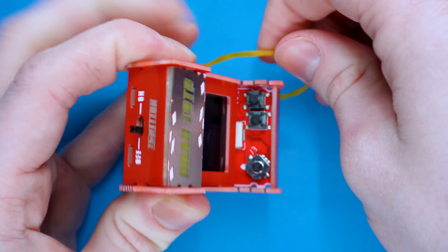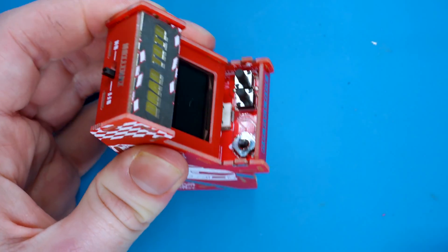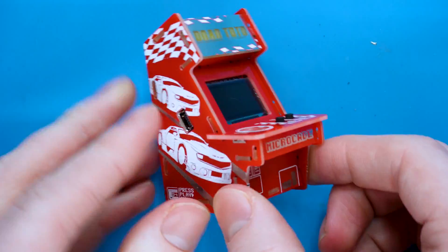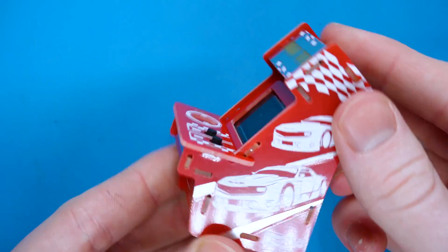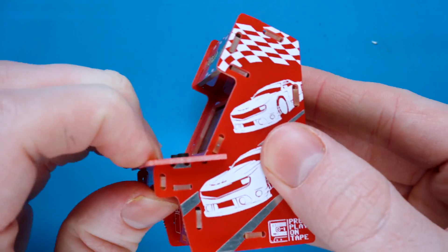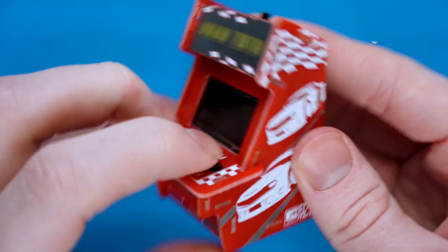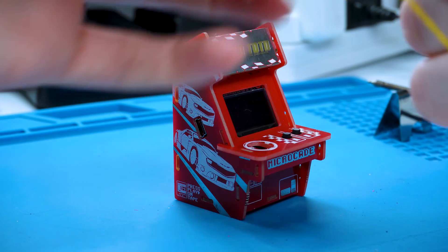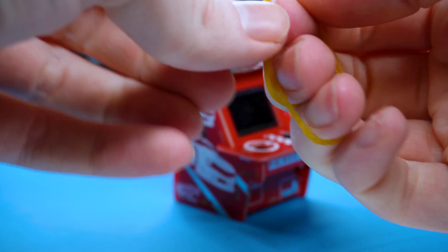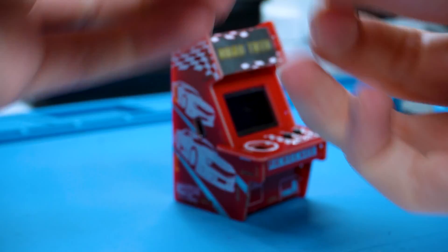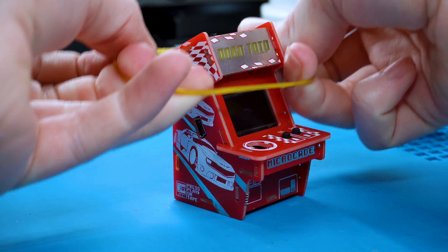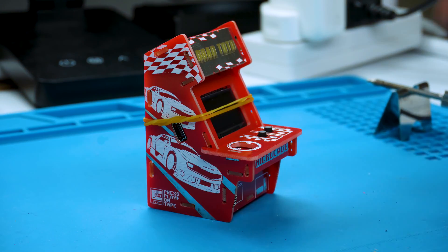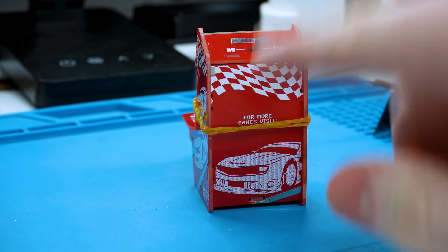Once we're happy with the assembly, we can actually go ahead and take off the rubber band and make the final assembly, which is the control board cover. This will actually lock it together. We don't actually need to do any more soldering, but just to make sure the whole structure is solidified, we will solder in the last solder points. In order to make sure that the microcade doesn't come apart while we're soldering, we'll get the elastic band and twist it so it's even smaller and nice and tight.